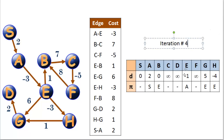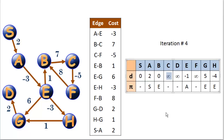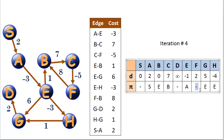Let's do iteration 4. A to E is not going to change anything. B to C with a cost of 7 — we don't have a route to C yet, and we can get there for 7 more than it costs to reach B, so 0 plus 7 is 7, with predecessor B. Now C to F with a cost of negative 5: we were getting to F in infinity; stopping at C takes us 7, and adding negative 5 gives us 2 to reach vertex F with predecessor C.